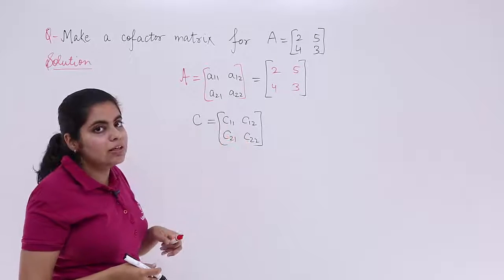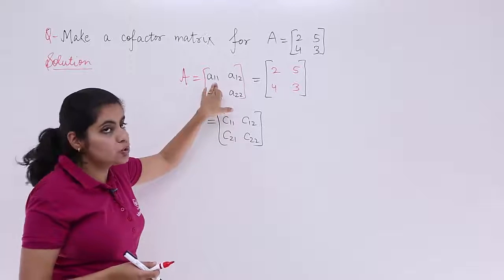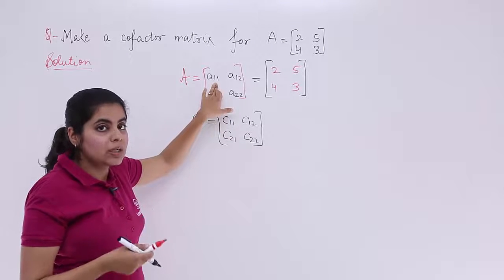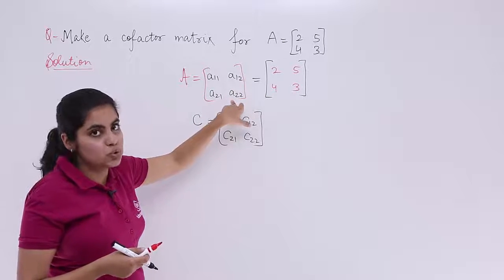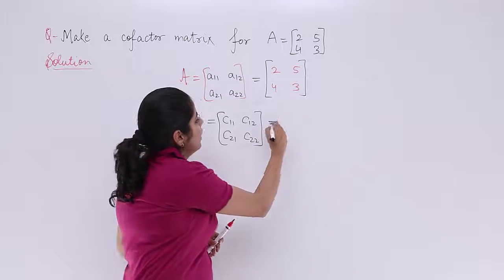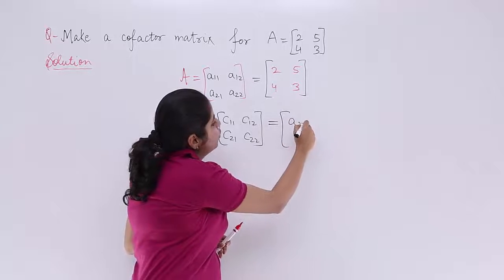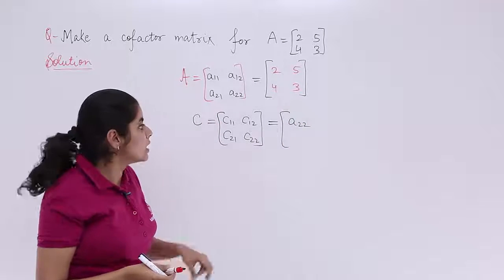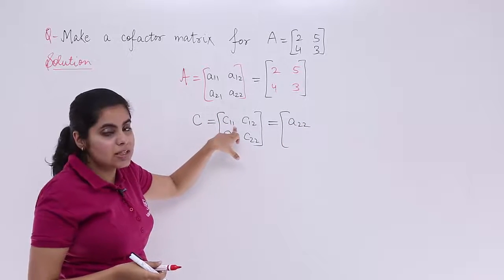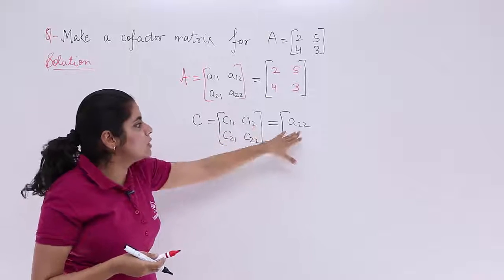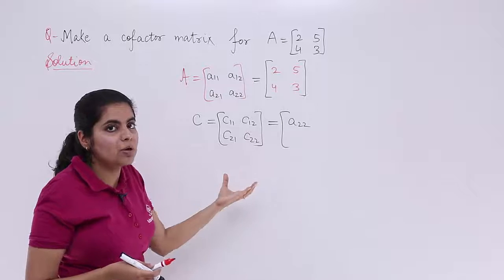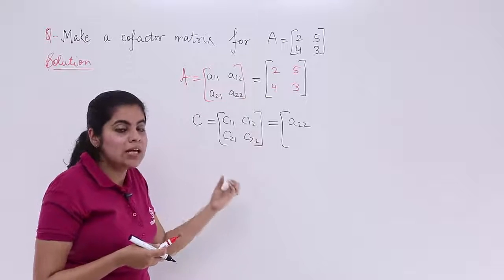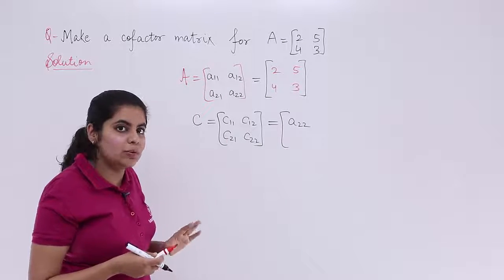Now, what is C11? C11 was related to A11. Leave the first column, first row, you are left with A22. So C11 is basically A22 only. Now, 1 plus 1 is 2 which is even, so it is plus A22. Why am I doing it the general way? Because in the previous videos, we did that way. It will be better to understand that manner only.